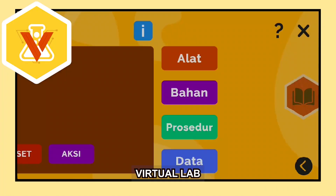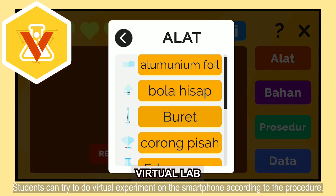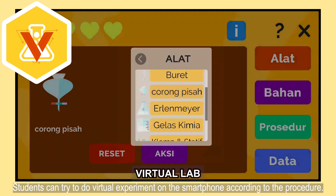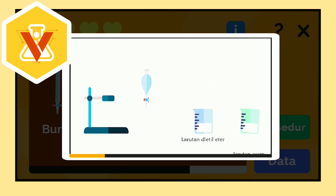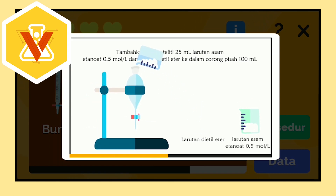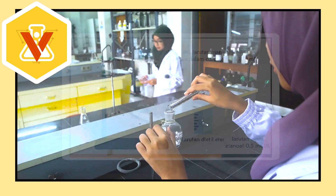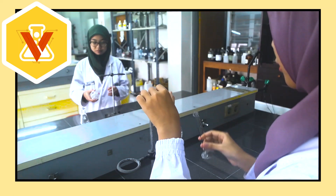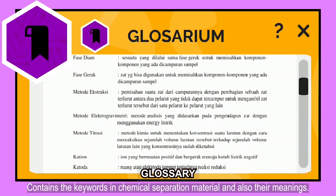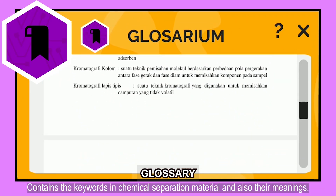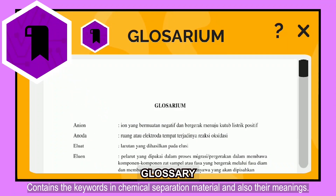On the virtual lab menu, students can try to do virtual experiments on the smartphone according to the procedure, while the classroom menu contains keywords in chemical separation material and also their meanings.